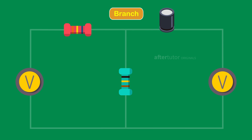Branch: The path which traces from one node to the next node, containing one circuit element between them, is known as a branch. And the current flowing through this branch is the branch current.